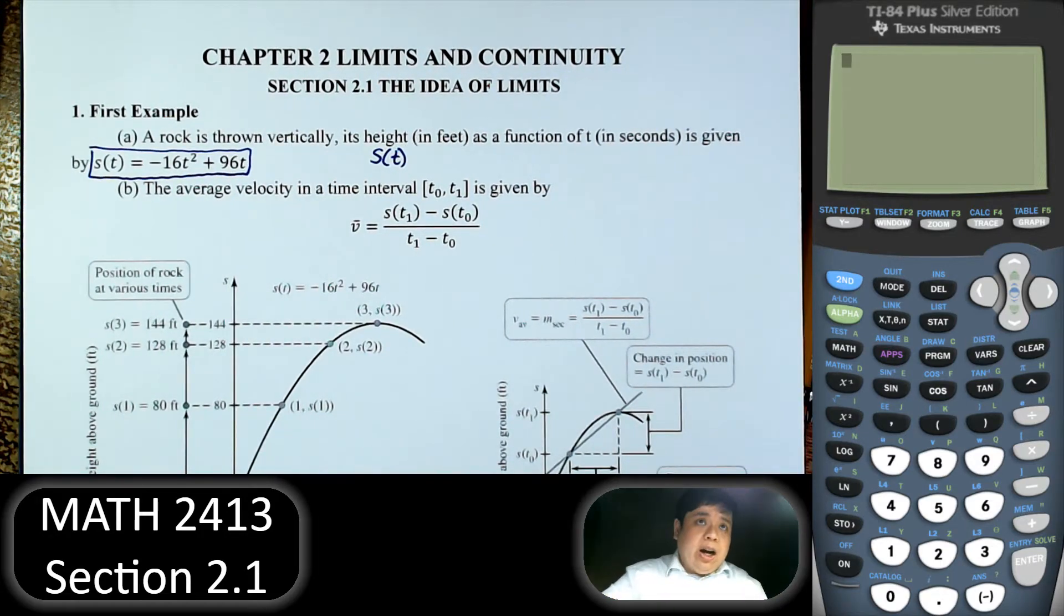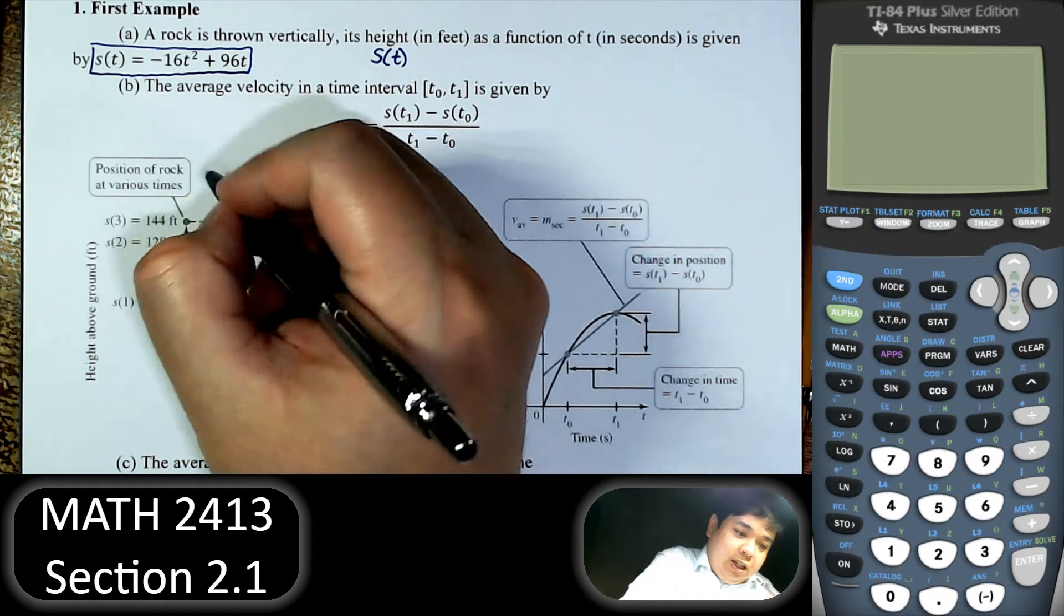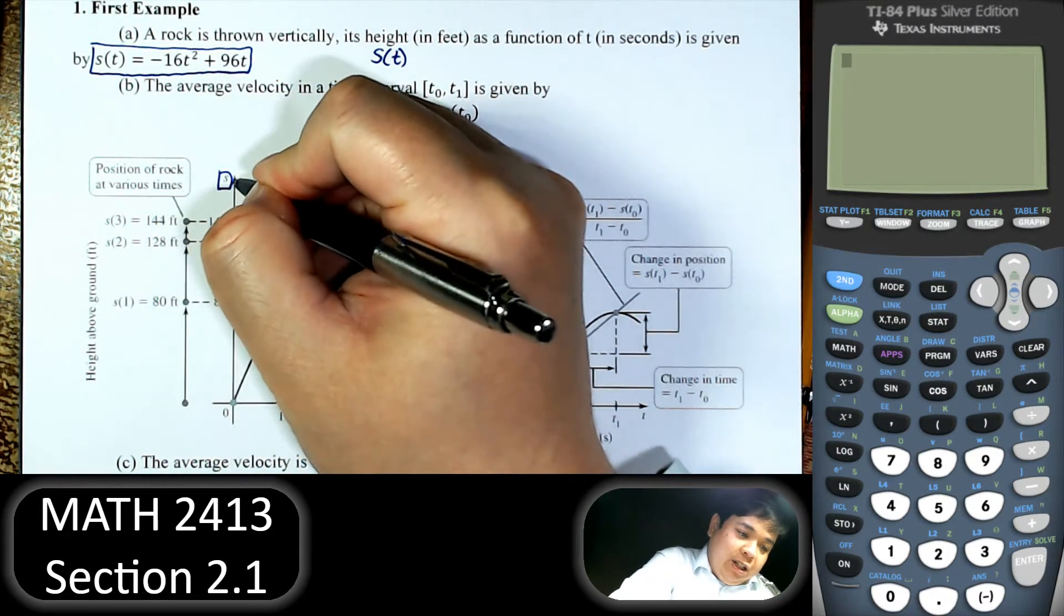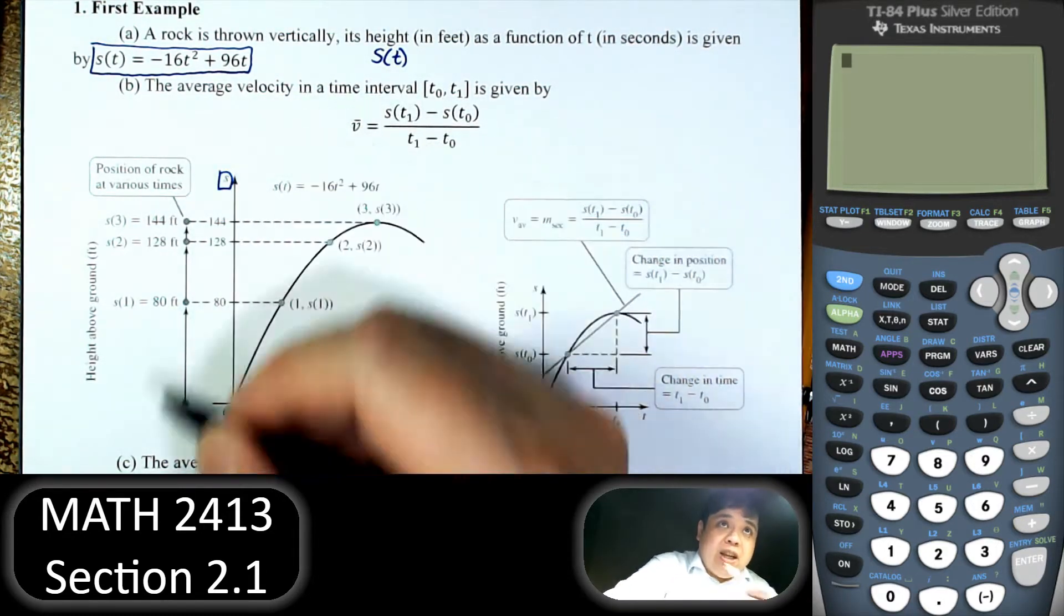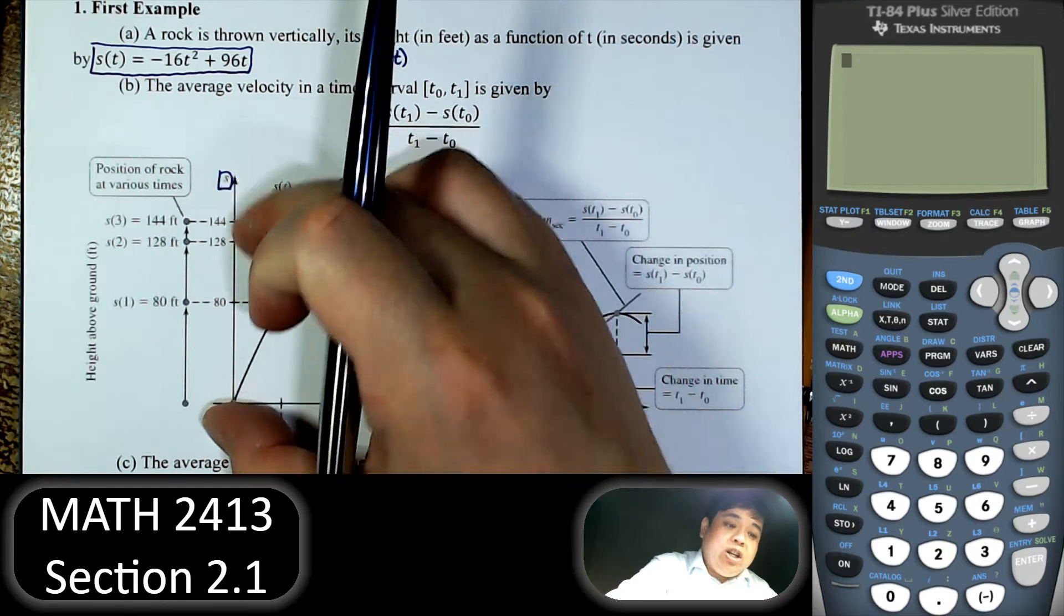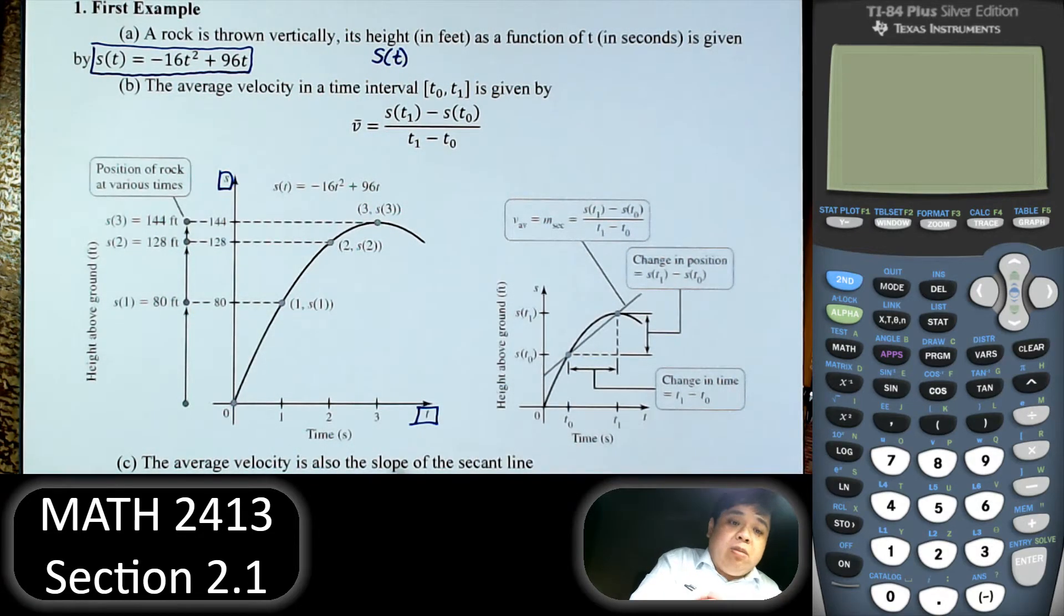So if we plot it, it will look like this. So here the vertical axis is the position of the rock, and the horizontal axis is time in seconds.